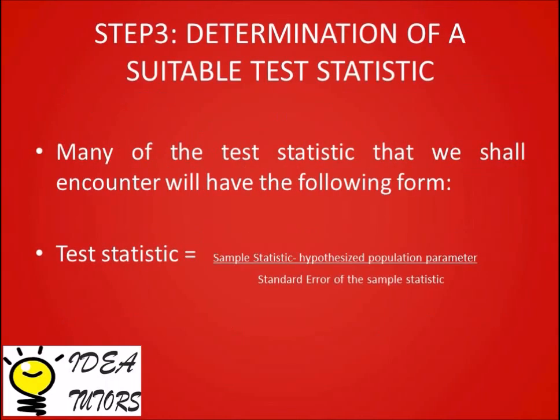Step 3: Determination of a suitable test statistic. Many of the test statistics we shall encounter have the following form: test statistic equals the sample statistic minus the hypothesized population parameter, divided by the standard error of the sample statistic.